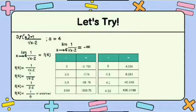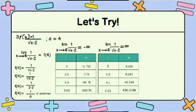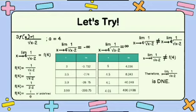For the right side, the limit of 1 over the square root of X minus 2 as X approaches 4 is equal to positive infinity. Our X values from the right are 5, 4.5, 4.1, and 4.01. Applying the same substitution, f of X equals 4.236, 8.243, 40.2248, and 400.2498. We can clearly see that the results from the left and right sides are not equal. Therefore, the limit of 1 over the square root of X minus 2 as X approaches 4 does not exist.